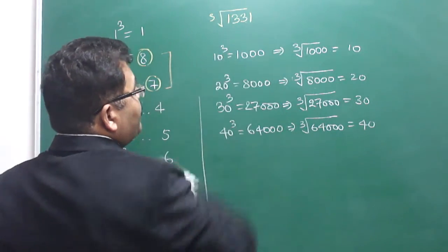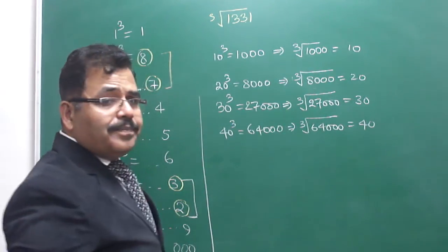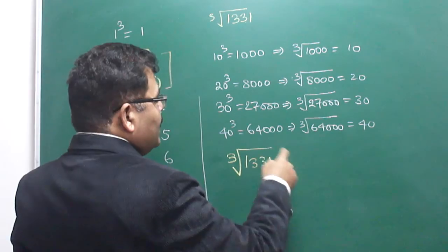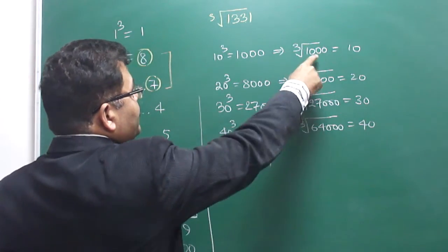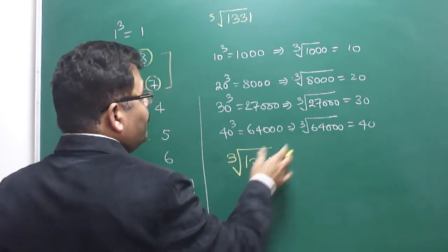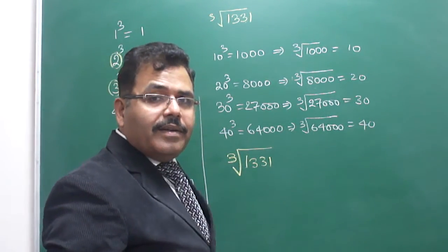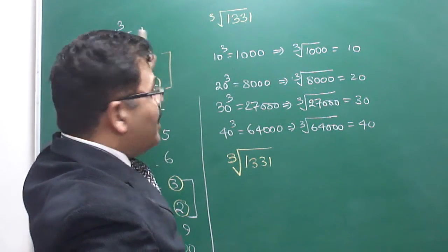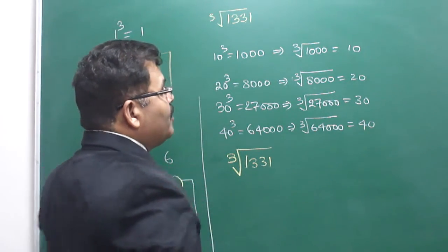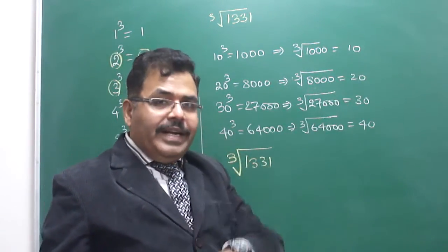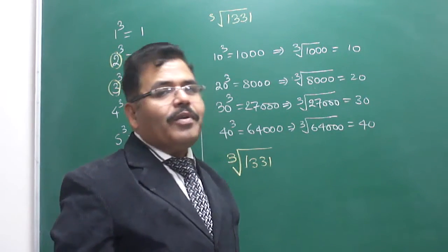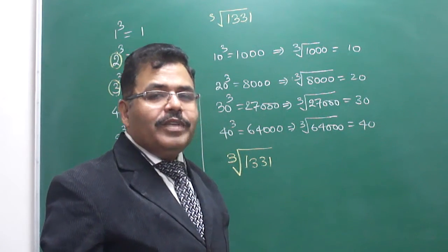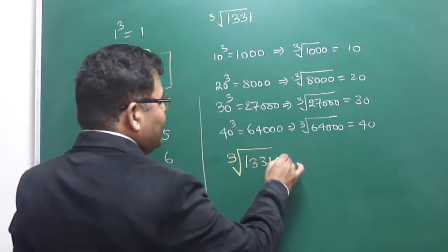Suppose you have to find the cube root of 1331. This number lies between 1000 and 8000, so the answer lies between 10 and 20. Now, the unit place is 1 — if the unit place of the original number is 1, then the unit place of the cube root must also be 1. So the number lies between 10 and 20 and has unit place 1. The answer is 11.